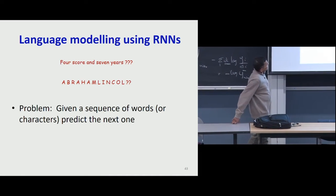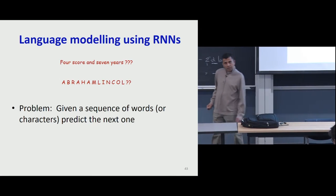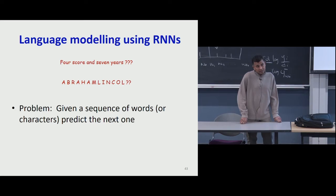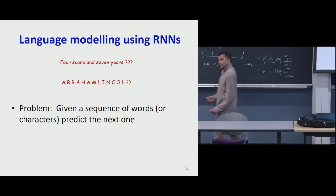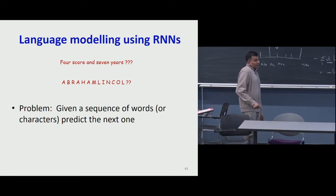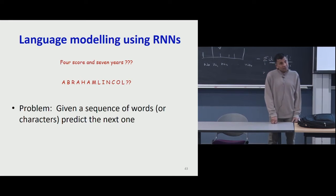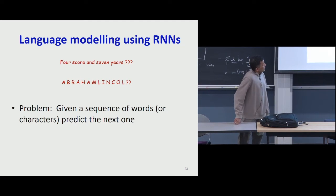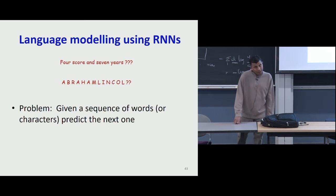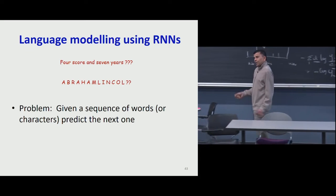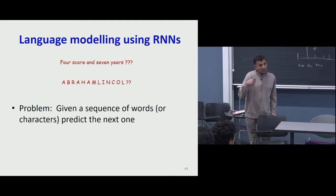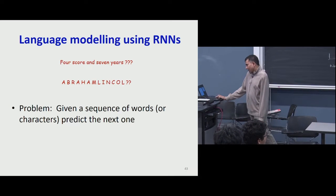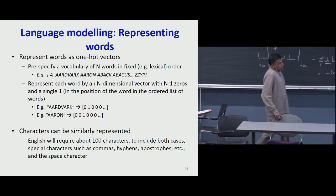In the case of words, you'd be given something like 'four score and seven years' and asked what is the next word? Your general knowledge would say this is from the Gettysburg address — 'four score and seven years ago.' Or if I told you the characters so far are A-B-R-A-H-A-M-L-I-N-C-O-L and asked what the next character was, you would almost certainly guess N. Where did that information come from? How would you actually train a network to capture this information?